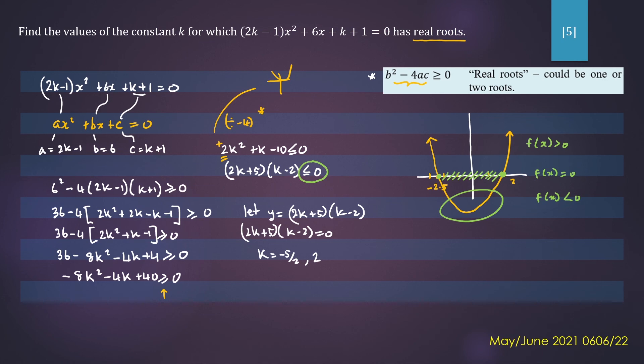That means your solution is any number between -2.5 and 2. So we can write that as -2.5, and it can include -2.5 up until 2. In interval notation, we'd write that as k ∈ [-2.5, 2]. So that's your final answer.